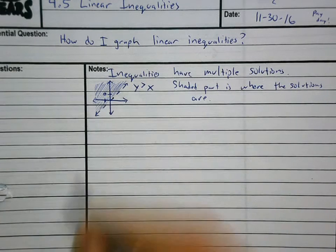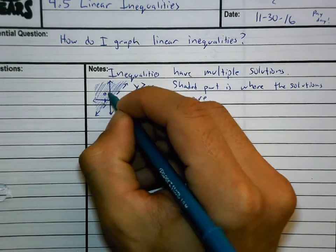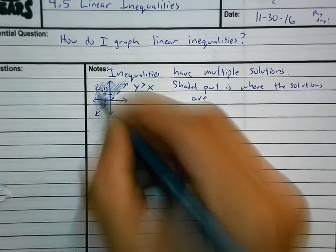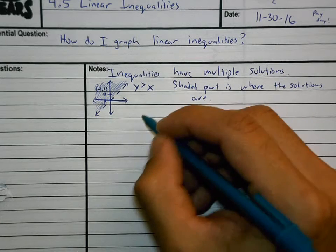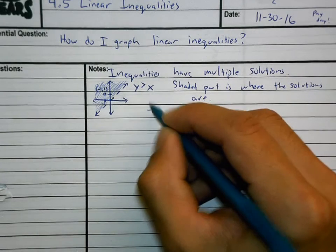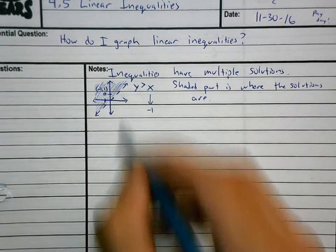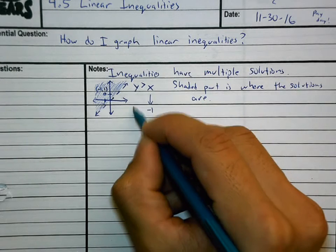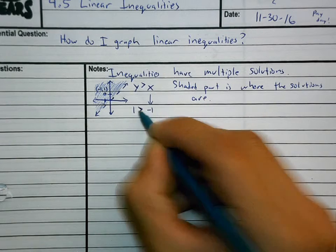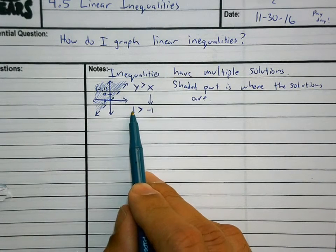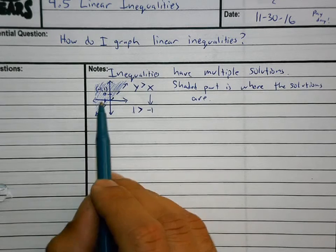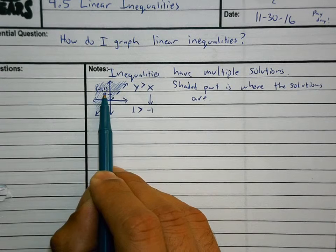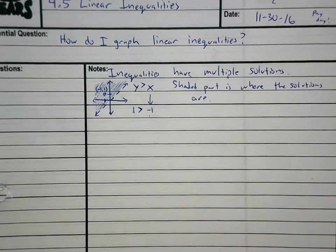This point here is the point negative one, positive one. I want to show you that it works: when x is negative one and y is one, is one greater than negative one? Yes — that means this point is a solution to that inequality.